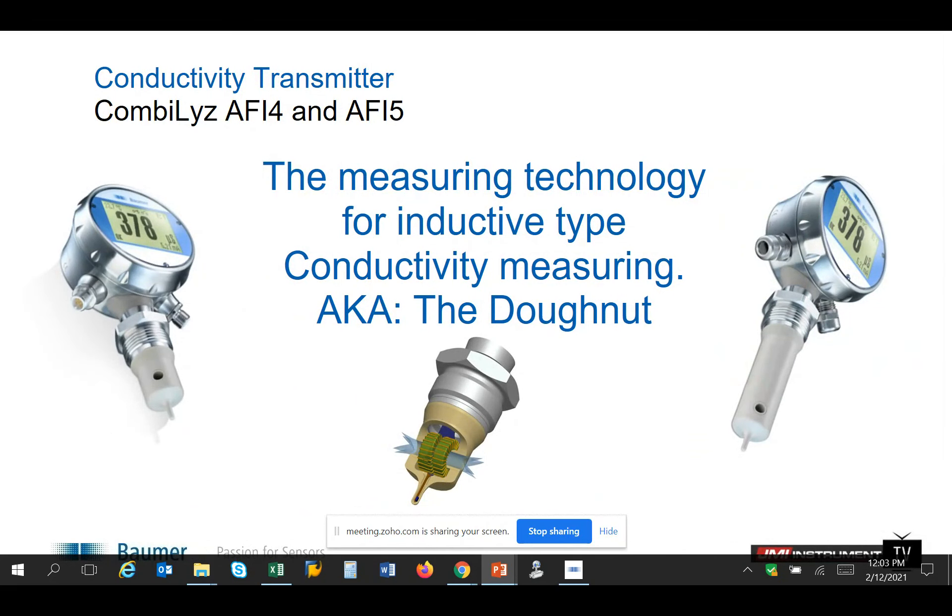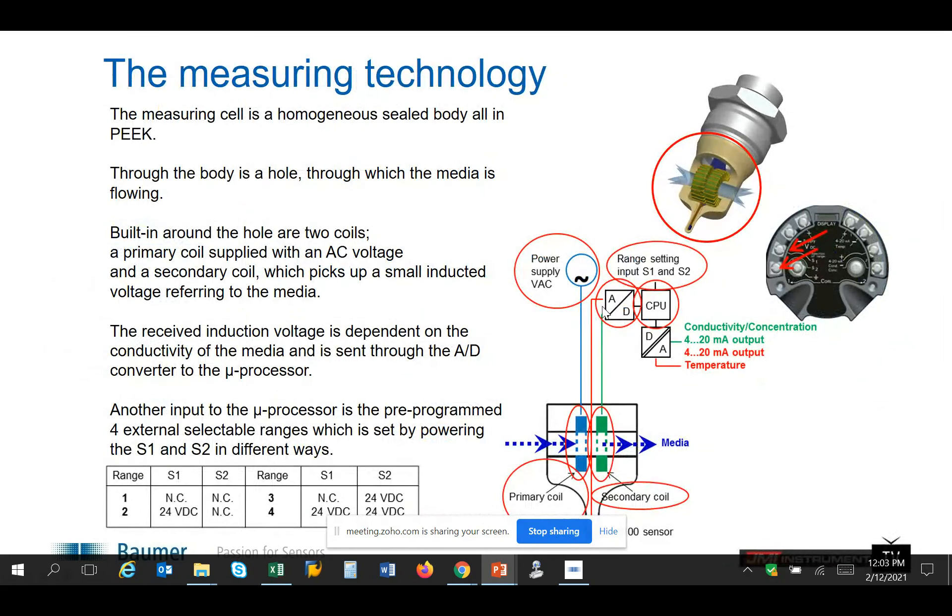So we're going to talk about the AFI-45, a conductivity measurement with the inductive type, what we call the donut or toroidal type. You can see the opening on the sensor. That's where we do our measurement points there. The fluid is going to flow through here, change the current. We're going to read that. We have an amplifier. It's going to put it out as a 4 to 20 milliamp signal, and it gives us both the conductivity slash concentration as well as the temperature.